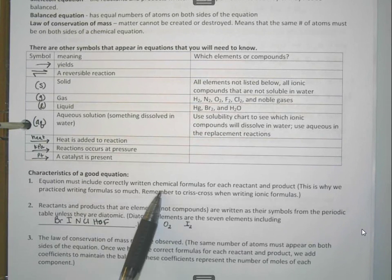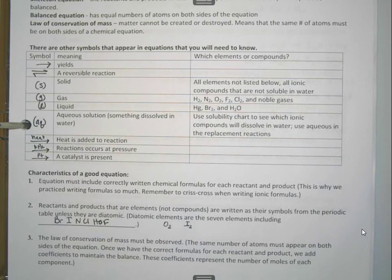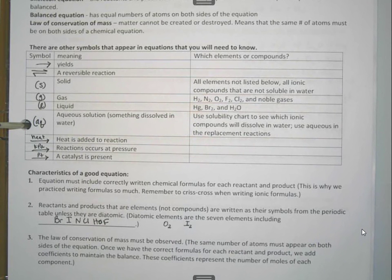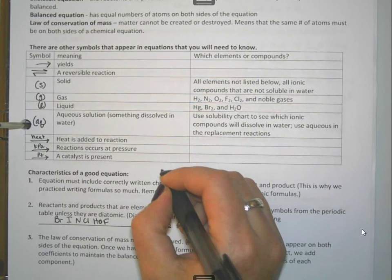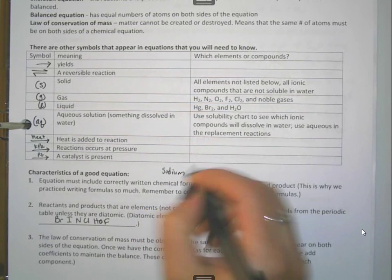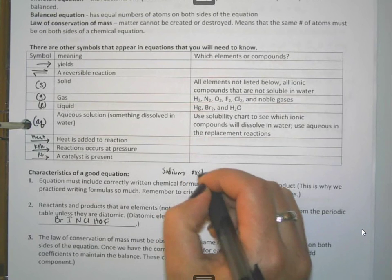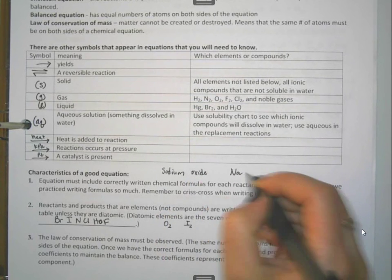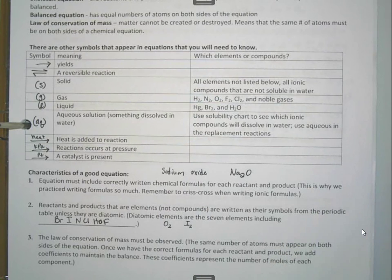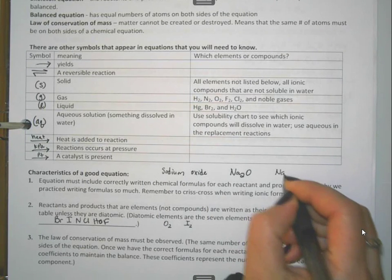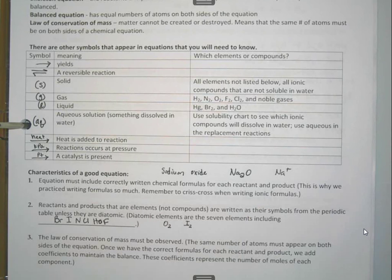Other things about equations that are helpful to know is that good equations have to have correctly written chemical formulas. When you get ready to write your formulas and chemical reactions, don't forget that you have to go back to your rules about writing ionic compounds and ionic naming rules and things in order to make it work. For example, if you're given a word, like if you're told to write a formula for sodium oxide...